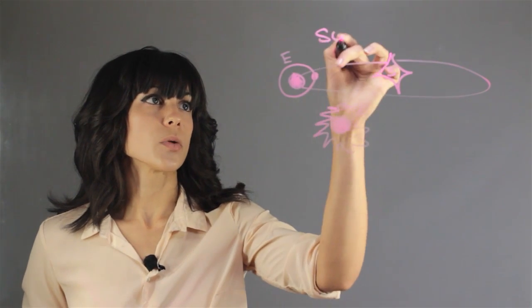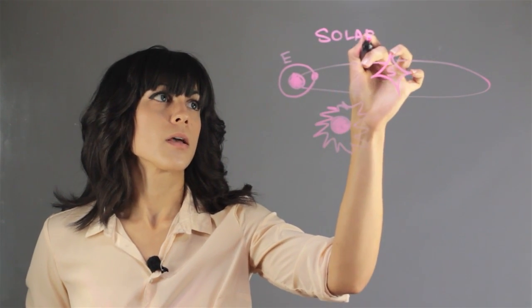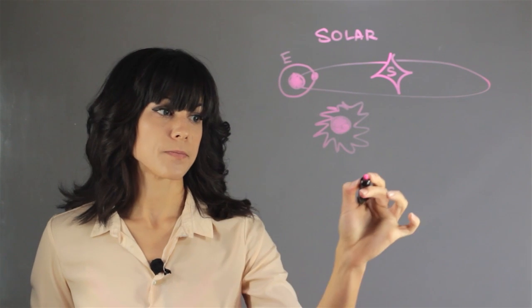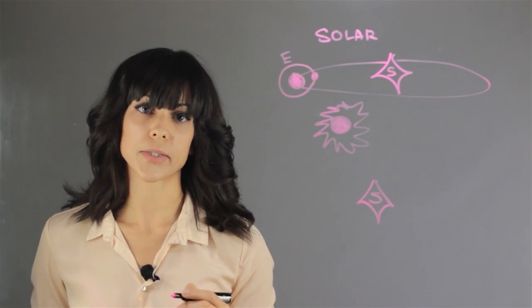Okay, so this is the solar eclipse. Now let's talk about the lunar eclipse and where do the bodies have to be in order to block the Moon.